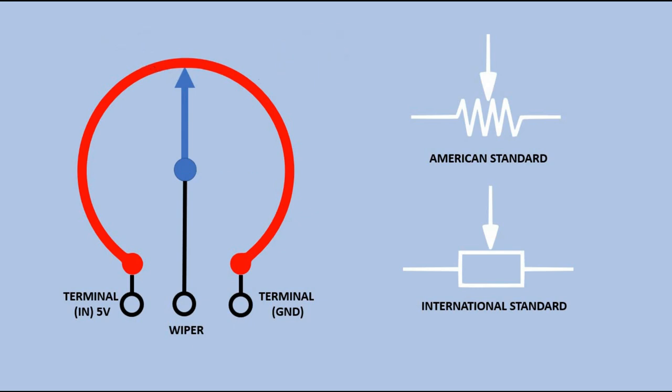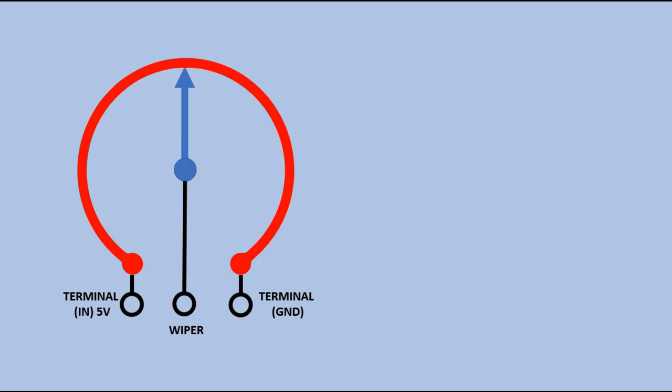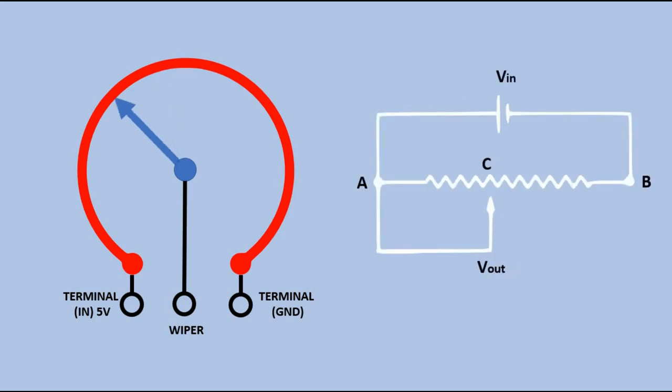So let's see a short simulation. Here is the circuit in which we connect the potentiometer. Now let's turn the shaft all the way to the left. If we now measure the resistance between the terminal and the wiper we will see zero ohms.